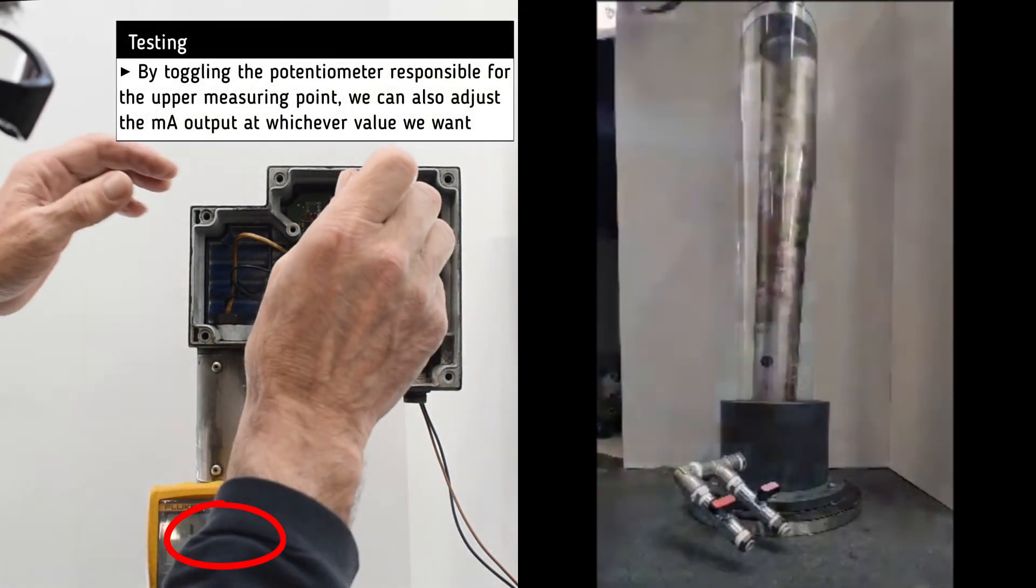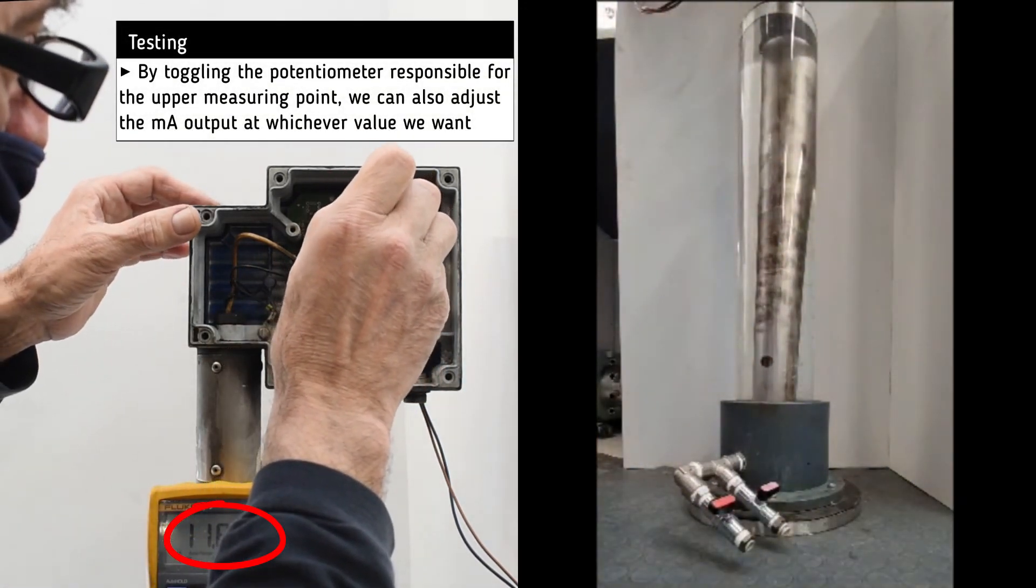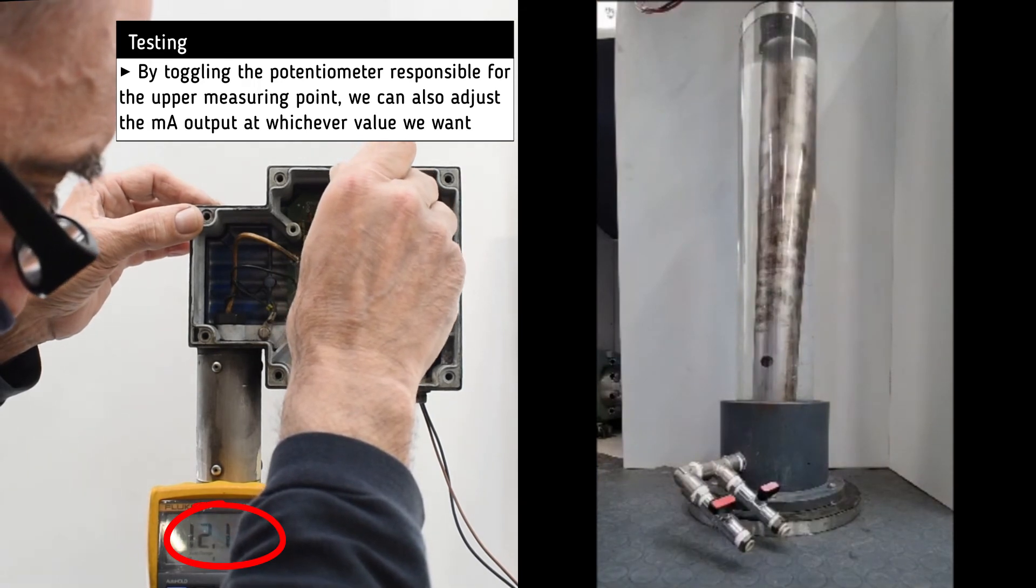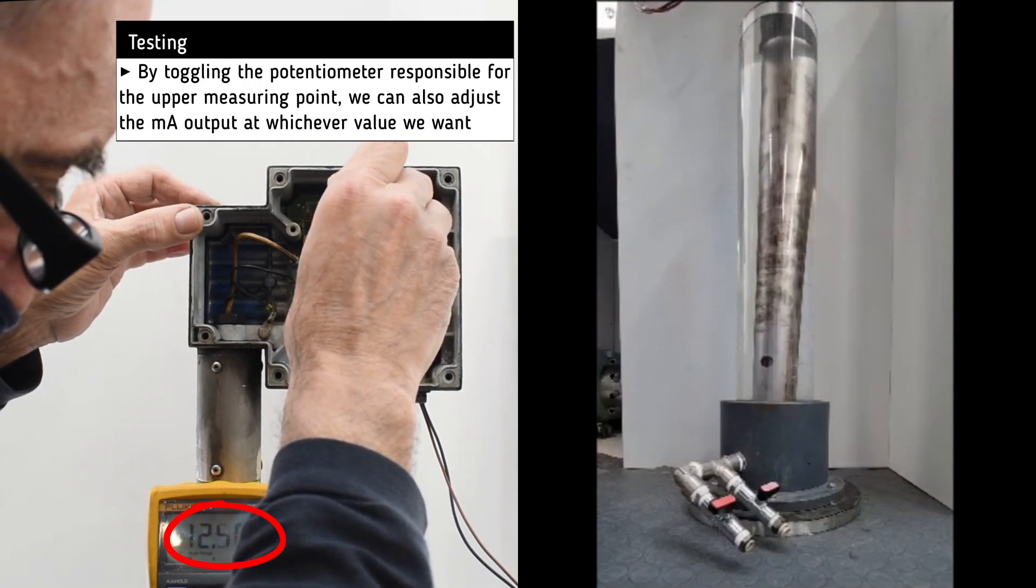By toggling the potentiometer responsible for the upper measuring point, we can also adjust the milliamp output at whichever value we want.